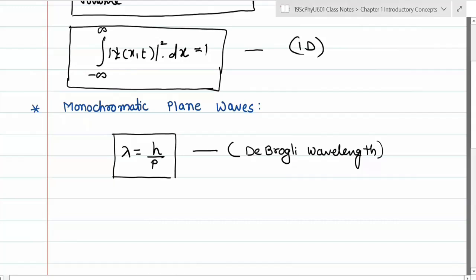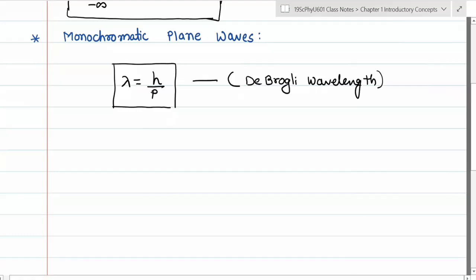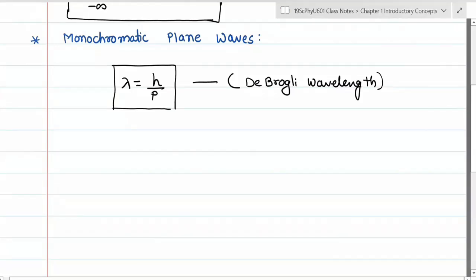If we want to believe De Broglie — if we want to analyze this concept of matter waves — the first thing we come across is De Broglie's wavelength, because De Broglie was the first one to try to describe matter waves. So we begin with a monochromatic wave, which is spreading and is also a plane wave.